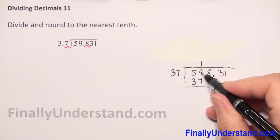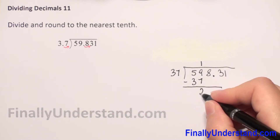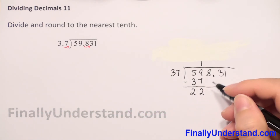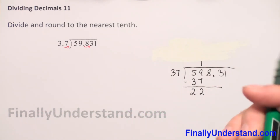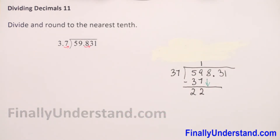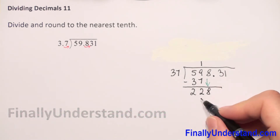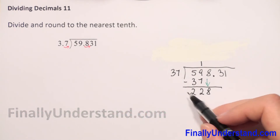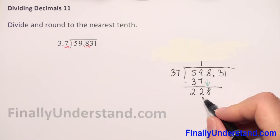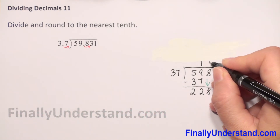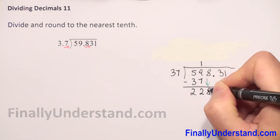Now we do subtraction: 9 minus 7 is 2, 5 minus 3 is 2. Next, we take down the next digit, 8, giving us 228. How many times does 37 go into 228? 6 times. We write 6 exactly in the same column.